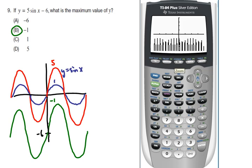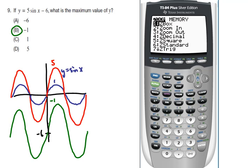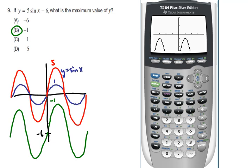Now I'm going to have to zoom trig one more time. Zoom trig. There we go. And I'm going to do the maximum. Option 4. Between 0 and pi. Guess.